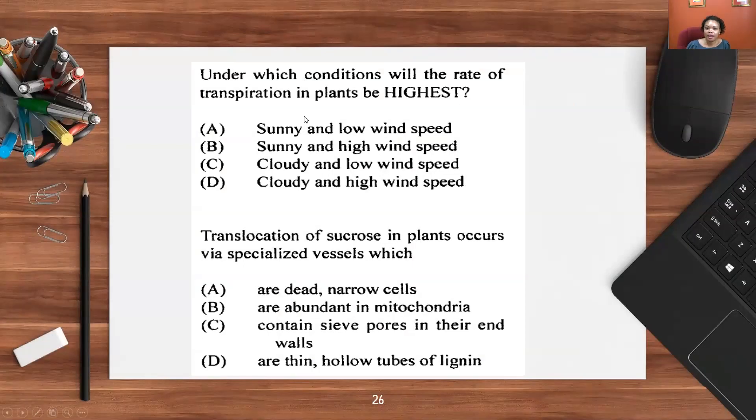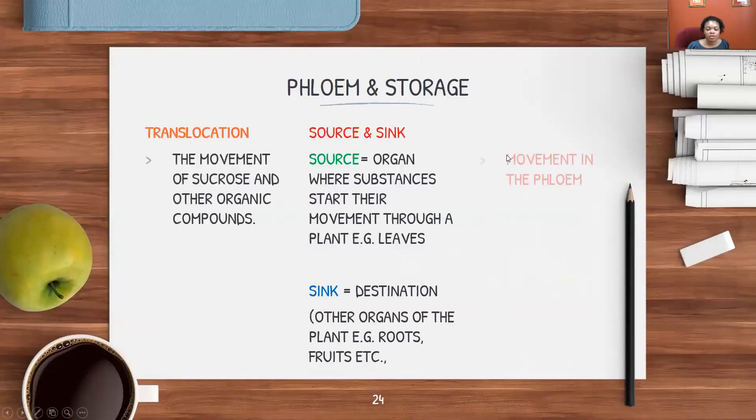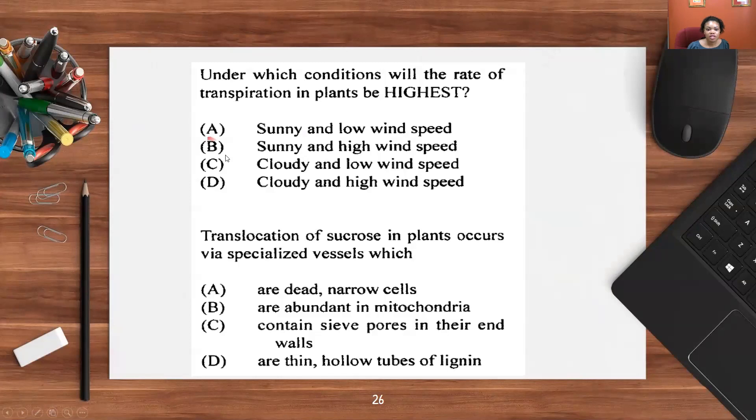Under which conditions will the rate of transpiration in plants be highest? A, sunny and low wind speeds; B, sunny and high wind speed; C, cloudy and low wind speed; D, cloudy and high wind speed. We just looked at the factors. I'm saying you have light intensity, wind, and some others. They also have temperature, and of course, if it's sunny, you're also going to get high light intensity as well as heat. And humidity is a very important one as well. In this case, the response would be B. It's sunny, which is providing high light intensity and heat, so the temperature would increase. And it's windy, so high wind speeds. All of those things would affect the rate of transpiration, and the fact that it would be highest, which is a key word here.